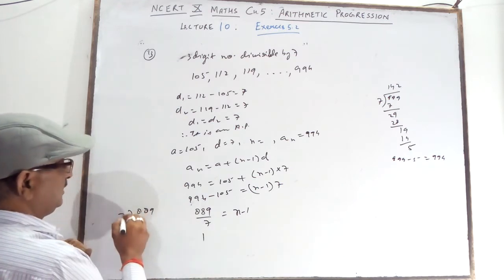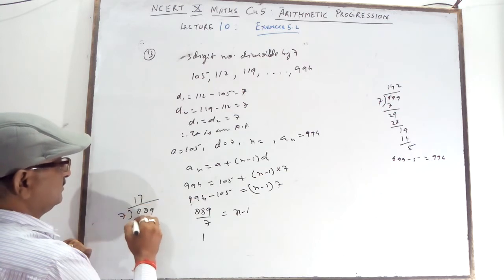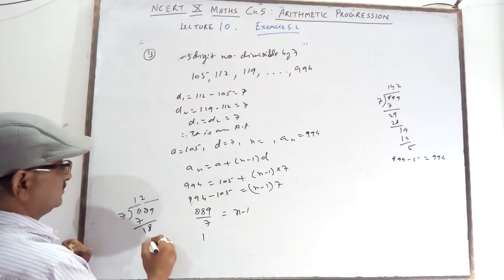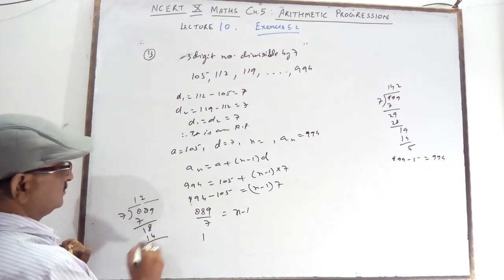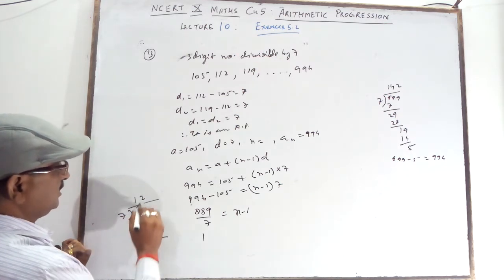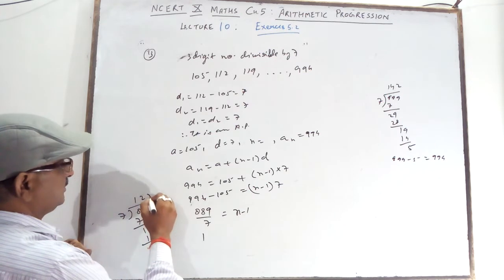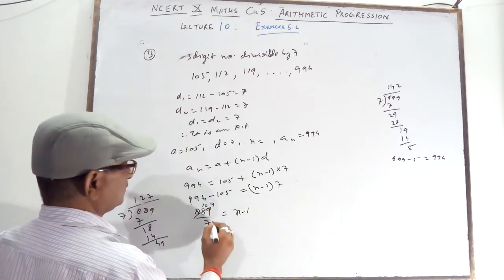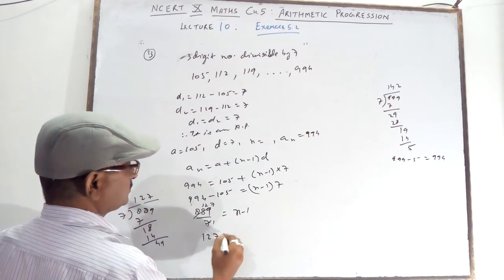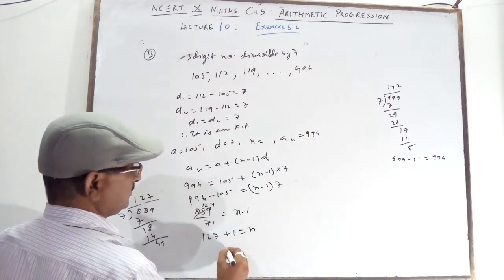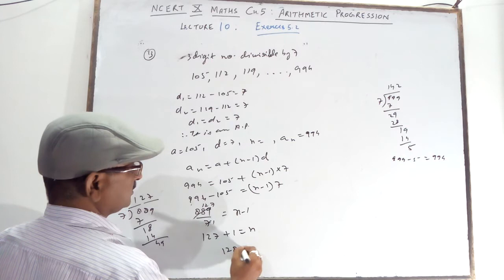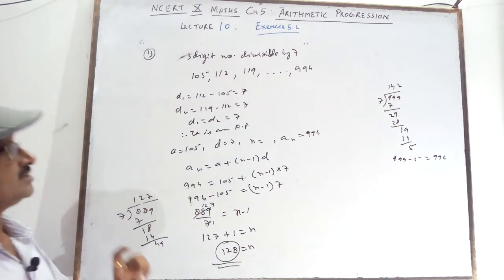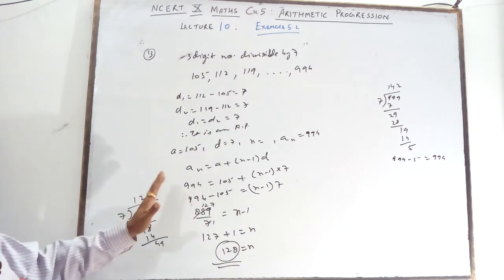Dividing 889 by 7: 7 × 127 equals 889, so N minus 1 equals 127. Therefore N equals 127 plus 1, which is 128.